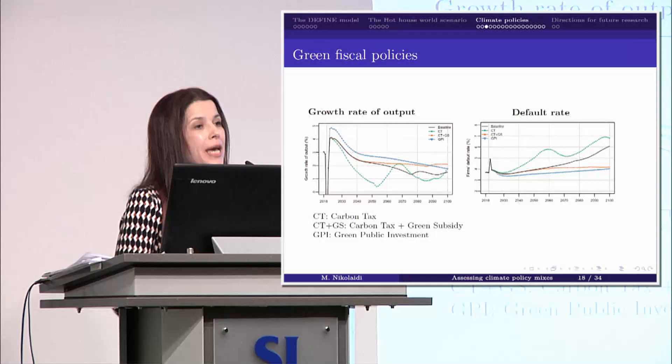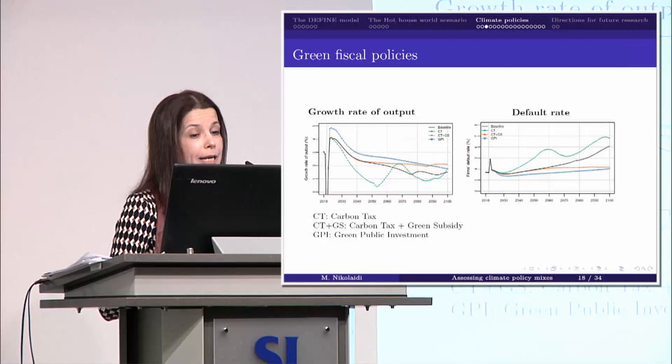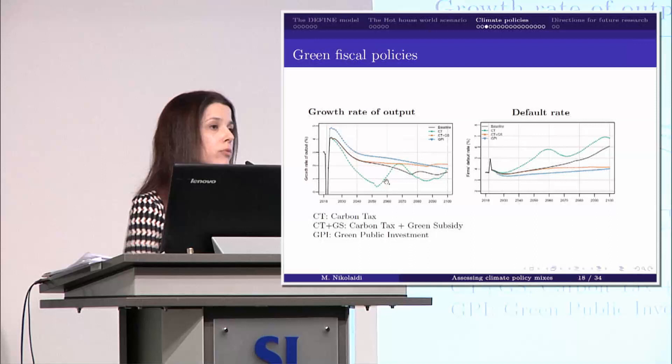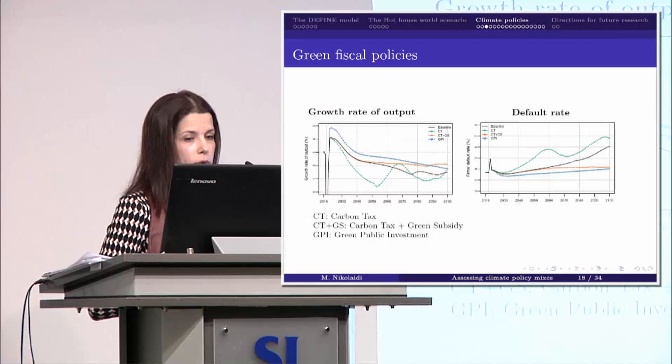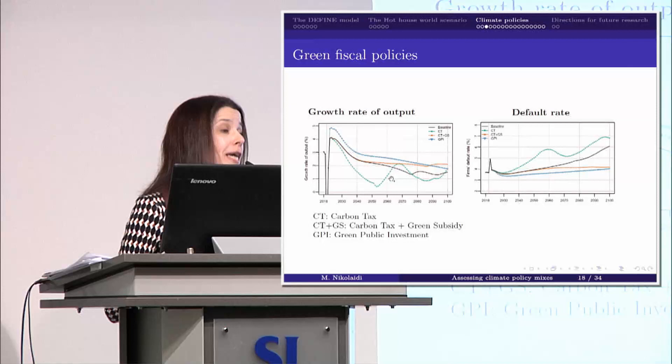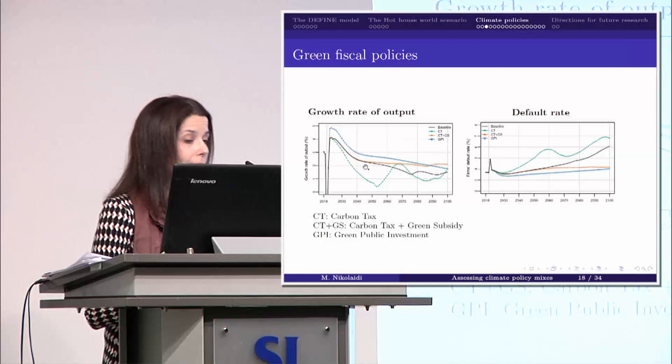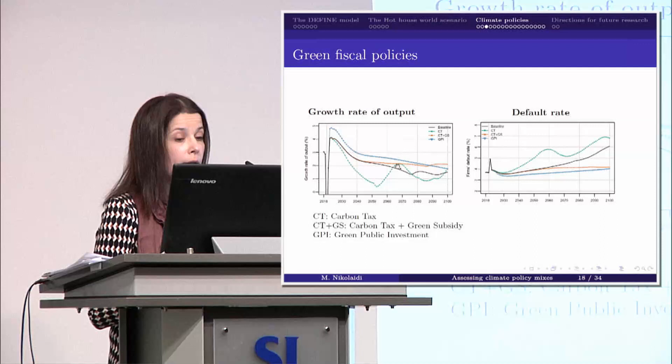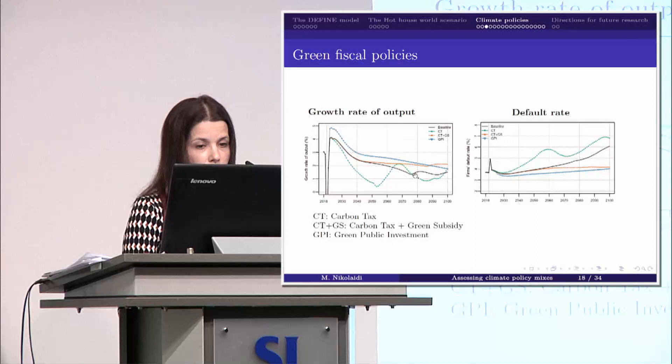At some point, there is a turning point. This is because firms gradually invest in green capital. As a result, they have less emissions, so they have to pay less in taxes, and their profits go up. At some point, they are able to invest more, and we have this increase in the growth rate of output. This cyclicality can be avoided if we combine carbon taxes with green subsidies — the recycling of revenue — so we avoid these cycles at the beginning, and at the end the growth rate of output is better compared to the baseline scenario.